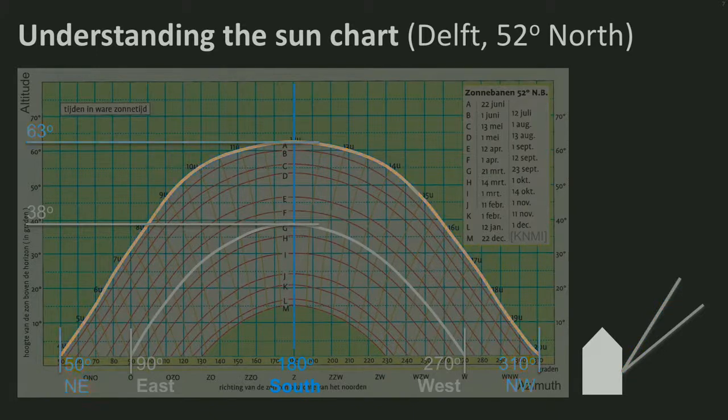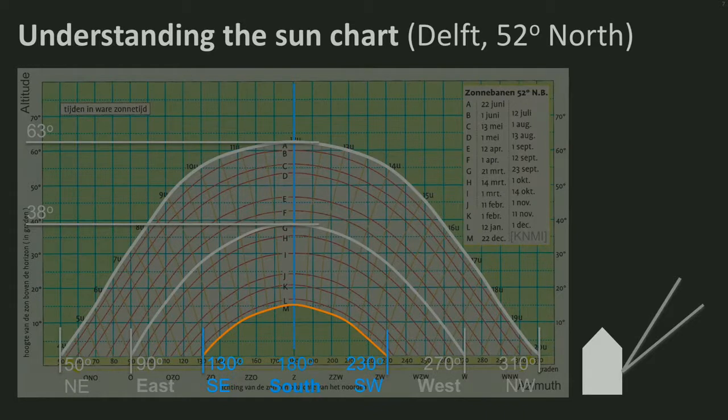In wintertime, 21st of December, the sun only peeps above the horizon shortly. From 130 degrees southeast to 230 degrees southwest. And the maximum altitude of the sun on this very day is only 15 degrees above the horizon. Here you see that incident on the house.